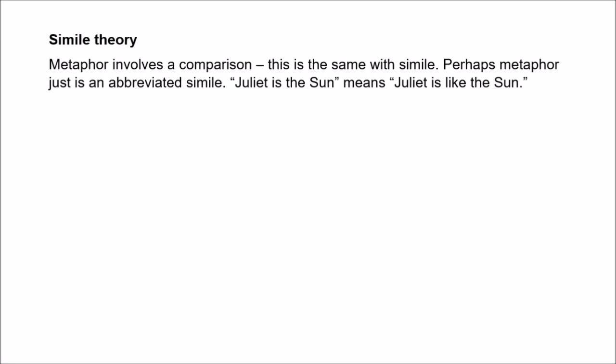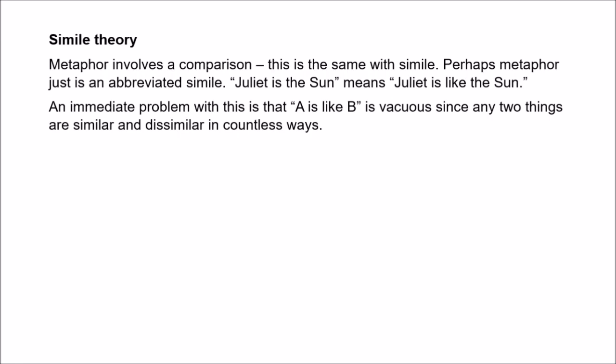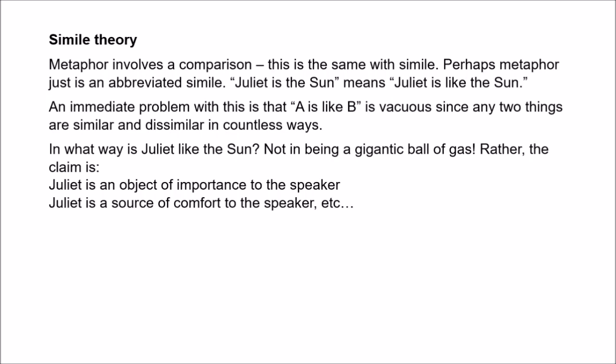While this view might initially seem plausible, it does face problems. One of the big problems is that similarity is vacuous, in that any two things are both similar and dissimilar in countless ways. In what way exactly is Juliet like the sun? Well, she's not like the sun in being a gigantic ball of gas undergoing nuclear fusion. Of course, context helps us to specify the respects of similarity that are relevant. If Romeo says 'Juliet is like the sun,' we know he isn't claiming that she's a gigantic ball of gas because we know that she's a person. We know that she's the object of his affections and so on. So Juliet is like the sun in being an object of importance, in being a source of comfort.